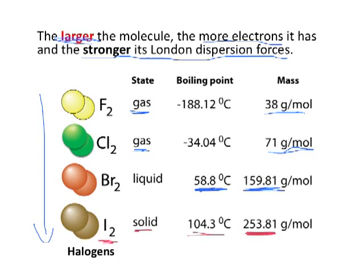This is a very important thing to remember: the size of the molecule — and this goes for both polar and non-polar molecules, as they both form London dispersion forces — the bigger the molecule, the stronger these London dispersion forces will be between the molecules. And so that's going to affect the boiling point.